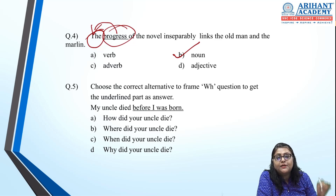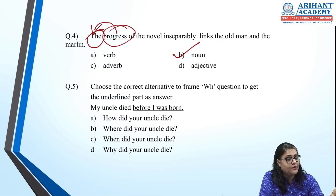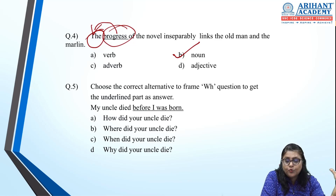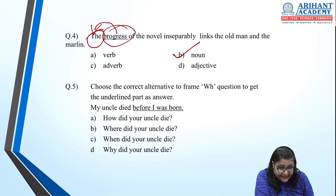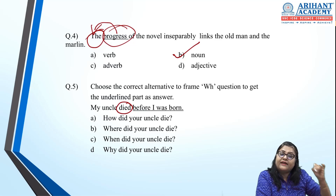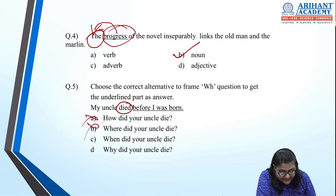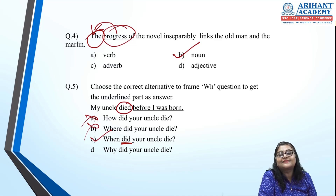Next: frame a WH question where the underlined part is the answer. 'My uncle died before I was born.' The verb is 'died' — past tense. The underlined part 'before I was born' talks about time. So the correct WH word is 'when.' The answer: 'When did your uncle die?' Note: use 'did' + root word 'die', not 'died' — you cannot have two past tenses in one sentence.